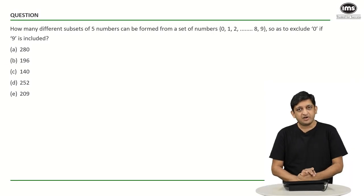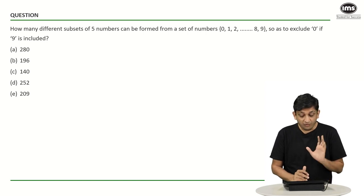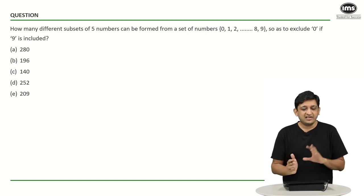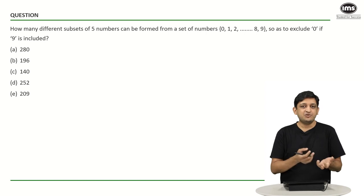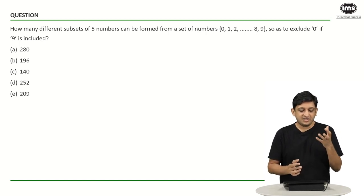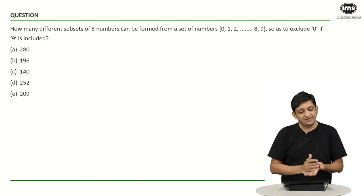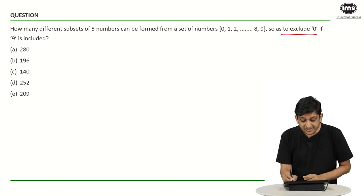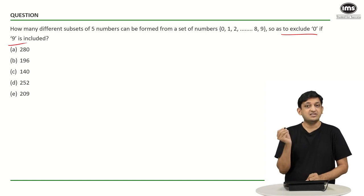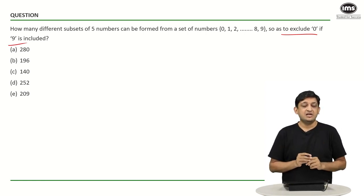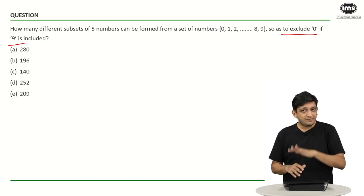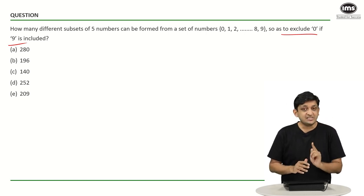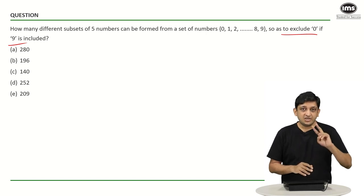Now this is a rather tricky question because there is an if-then condition given. You have to make a subset of 5 numbers, and when I say subset, the numbers have to be without repetition. The condition is: it must exclude 0 if number 9 is included. If 9 is included, then 0 cannot be present. But if 9 is not present, it doesn't mean 0 has to be present — we can do whatever we want. But if 9 is present, then 0 has to be excluded. So there are two cases possible.